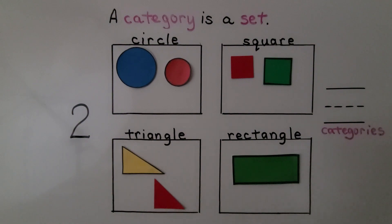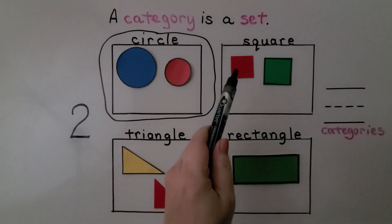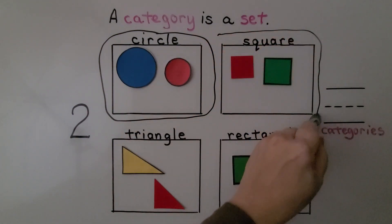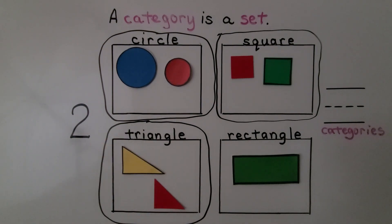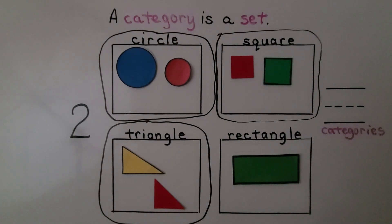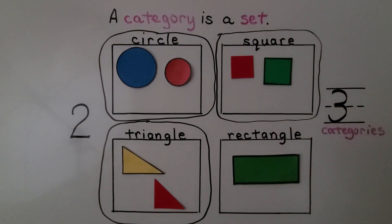This is the number two. We need to circle all the categories that have two shapes. There are two circles — we can circle that one. There are two squares — we can circle that one. And here are two triangles — we can circle that one. How many categories did we circle? There are one, two, three that have two in them. We can write the number three. Three categories had two in them.